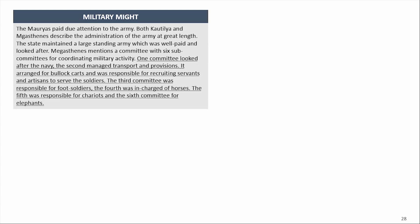On military might: the Mauryas paid due attention to the army. Both Kautilya and Megasthenes described the administration of the army at great length. The state maintained a large standing army which was well paid and looked after. Megasthenes mentions a committee with six subcommittees for coordinating military activity: one for the navy, the second managed transport and provisions, the third was responsible for foot soldiers, the fourth for horses, the fifth for chariots, and the sixth for elephants.